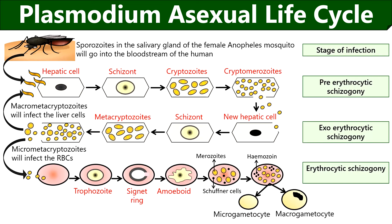The fourth stage is the erythrocytic schizogony, or the stage of RBC infection. The macrometacryptozoites will again infect the liver cells, while the micrometacryptozoites will now infect the RBCs. Micrometacryptozoites first penetrate the wall of RBCs and utilize the content of RBCs like hemoglobin to form a structure called trophozoite.